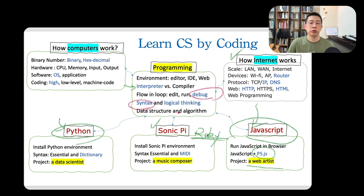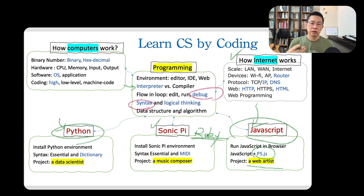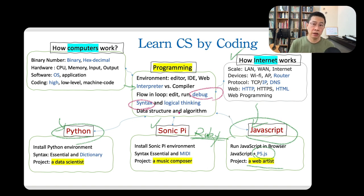Any programming language has its own syntax — the grammar of the language — and we need to learn about it. Online resources are very useful because you don't need to buy books. Programming languages keep evolving, so you need to develop the ability to consult the API or syntax documentation when you need it.